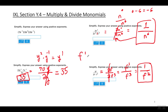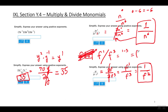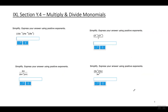Another way to think about it: f to the first power divided by f to the third power — subtract the exponents — gives 1 minus 3 equals negative 2, which equals 1 over f squared.